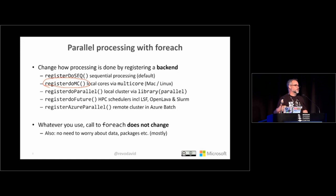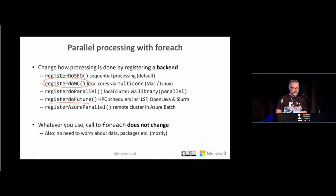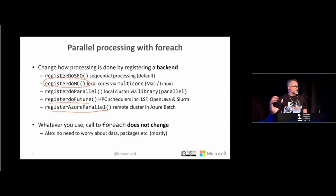You can also use the futures package as a back end to foreach, giving access to nice features for dealing with HPC computing schedulers like LSF, OpenLava, and Slurm to farm code out to those computing clusters. The one I'm focusing on here is a package we've developed and made available on GitHub called doAzureParallel, which takes the code declared in your foreach loop and runs it in a cluster it automatically spins up in the Azure cloud.